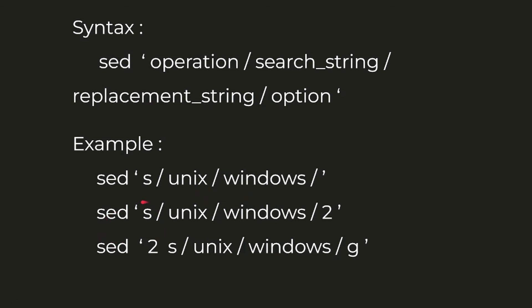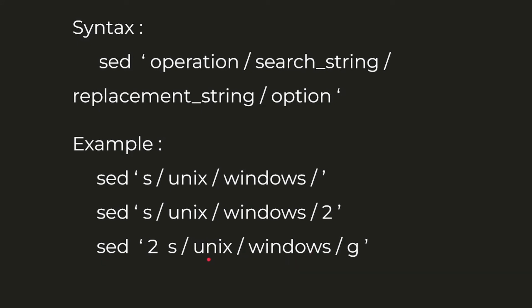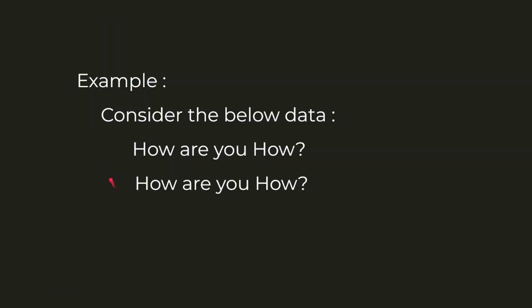The second command also performs substitution but specifies option '2', meaning it scans each line and replaces only the second occurrence of 'unix' with 'windows' in each line. The third command specifies line number 2 before the operation, and option 'g' — meaning it replaces all instances of 'unix' with 'windows', but only in the second line.